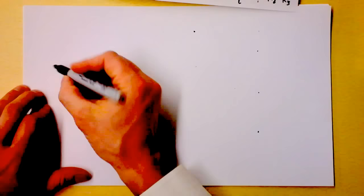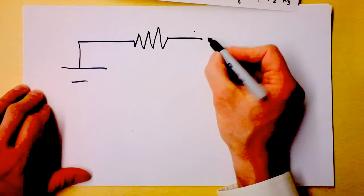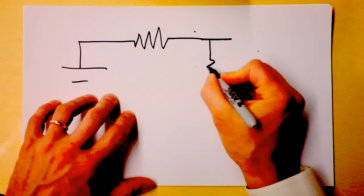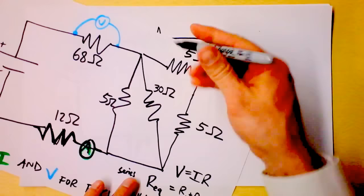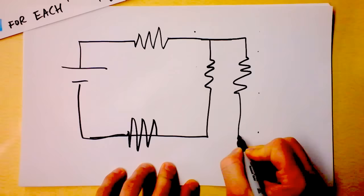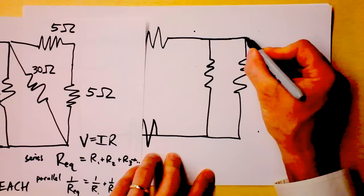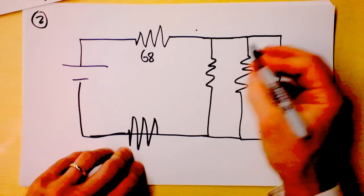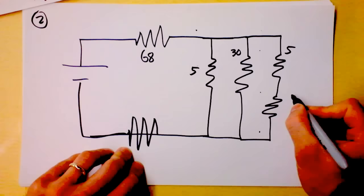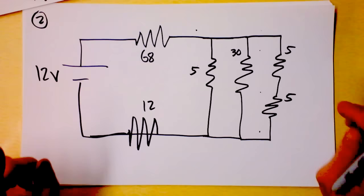I want to simplify this messy circuit by drawing it a little differently. I'll draw a battery and a resistor, and then three parallel paths coming off a junction. This is picture two. We've got 68 ohms, 5 ohms, 30 ohms, 5 ohms, 5 ohms, and 12 ohms, with a 12 volt battery.